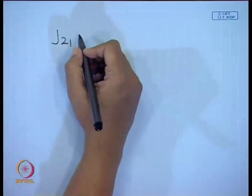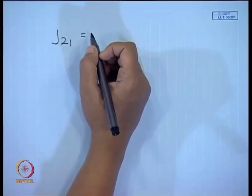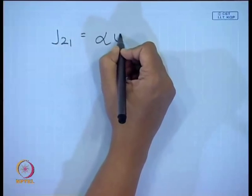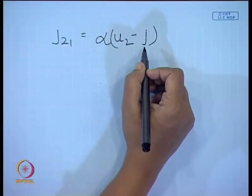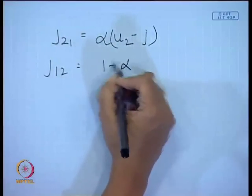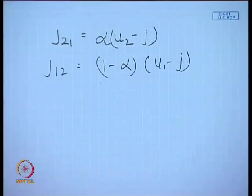Mathematically, j₂₁ = alpha·u₂ − alpha·j, and j₁₂ = (1−alpha)·u₁ − (1−alpha)·j. These three are the definitions: volumetric flux (already defined), drift velocity (component average velocity minus average velocity), and drift flux (volumetric flux of either component relative to a surface moving at the average velocity).